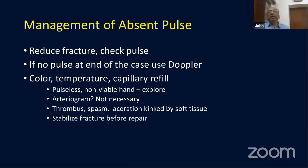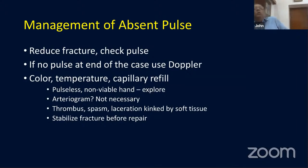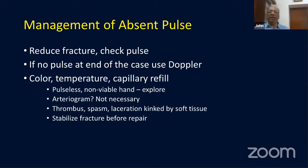An important topic often asked in theory papers and viva is management of an absent pulse. There are two different situations: a white pulseless hand with loss of circulation, and a pink pulseless hand. The management differs significantly depending on whether vascular reconstruction is needed.